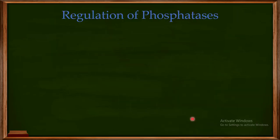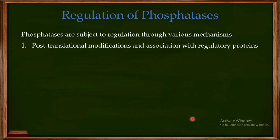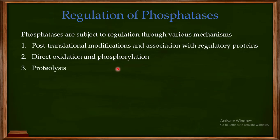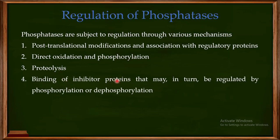These phosphatases are subject to regulation through a variety of mechanisms, including post-translational modification, association with regulatory proteins, direct oxidation, phosphorylation, proteolysis, and binding of inhibitor proteins. These inhibitor proteins may themselves be regulated by phosphorylation or dephosphorylation, so phosphatases can be controlled through multiple regulatory layers.